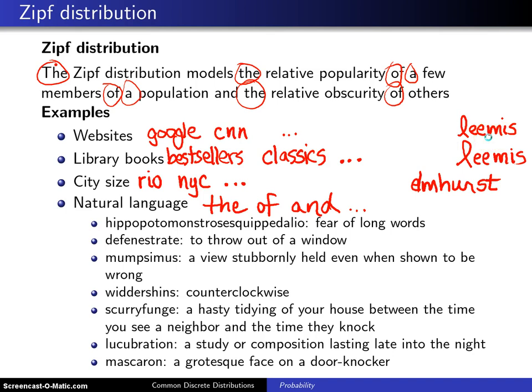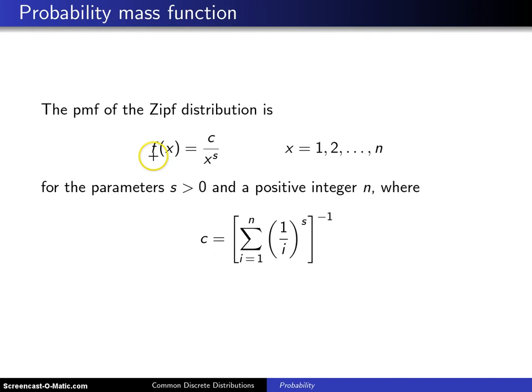The probability mass function of the Zipf distribution is f(x) = c / x^s, where x goes from 1 up to n. The constant c will be defined separately. The first few values — x = 1, 2, 3 — are the popular ones, corresponding to common words, large cities like Rio de Janeiro and New York City, etc. The values out at the higher end are the obscure ones.